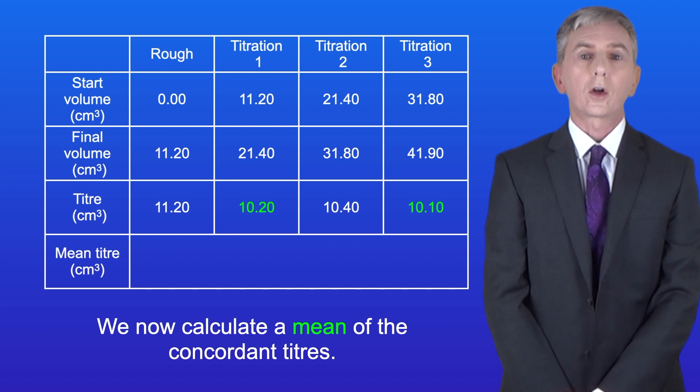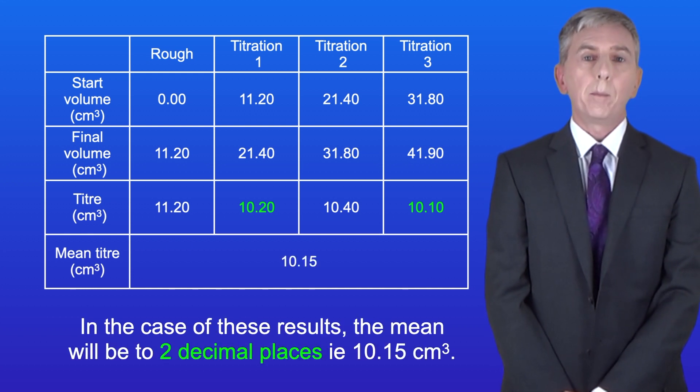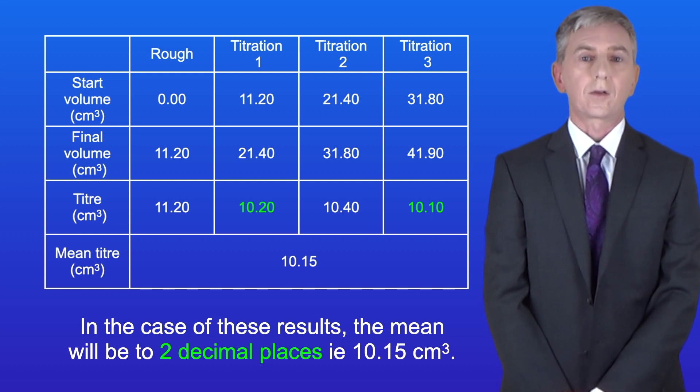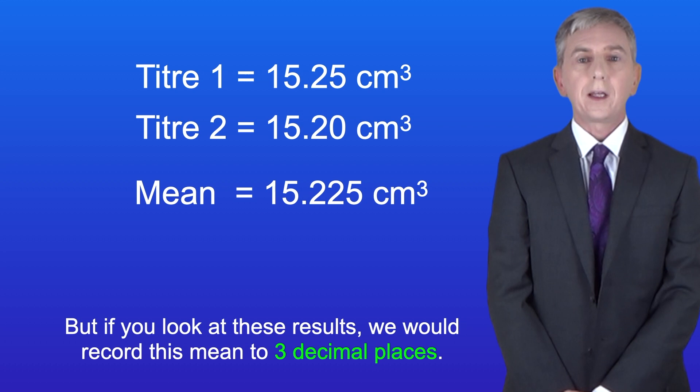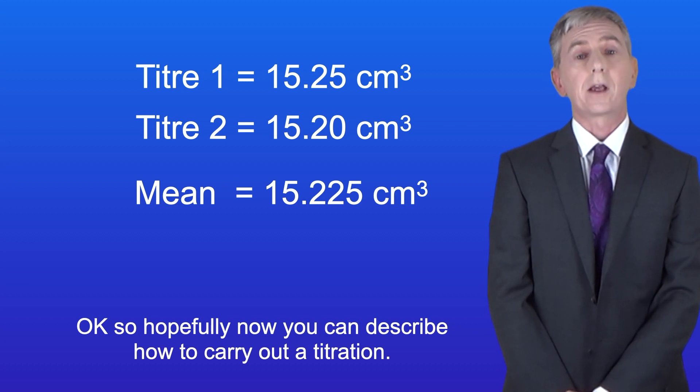We now calculate a mean of the concordant titers. Now in the case of these results the mean will be to two decimal places, i.e. 10.15 cm³. But if you look at these results we would record this mean to three decimal places. So hopefully now you can describe how to carry out a titration.